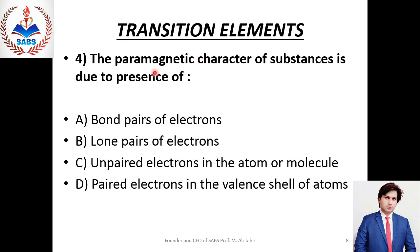Next question No. 4: The paramagnetic character of substances is due to the presence of — یہ پہلے بھی بات ہو چکی ہے کہ paramagnetism ایسی species show کرتی ہیں جن کے پاس unpaired electrons ہوتے ہیں۔ Right option must be Charlie.